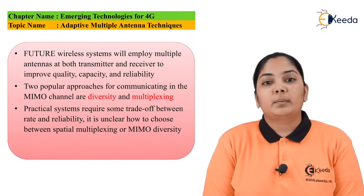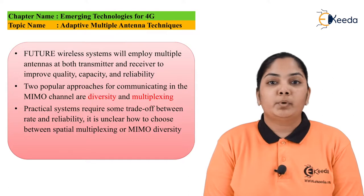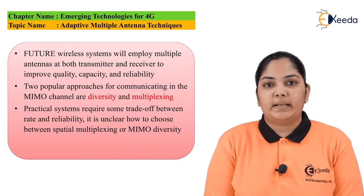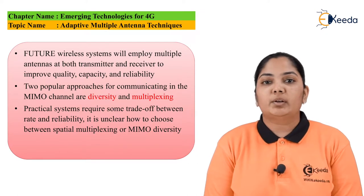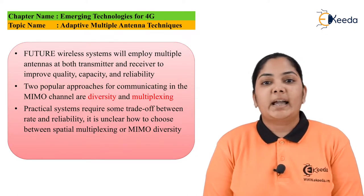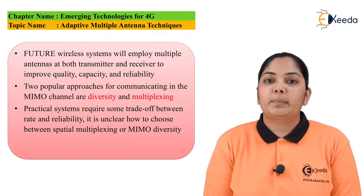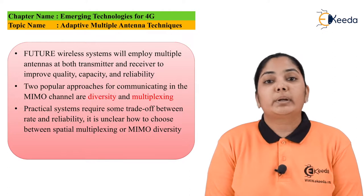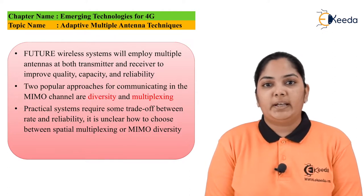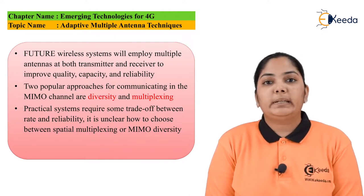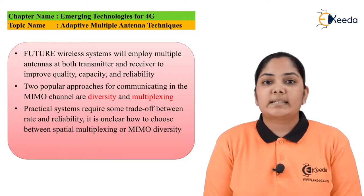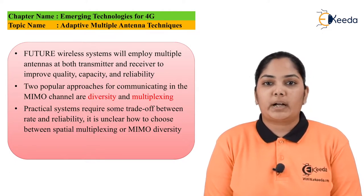The two most popular approaches for communicating in MIMO technology are called diversity and spatial multiplexing. In diversity, the same amount of information is transmitted through multiple channels. Since all these channels will go through independent or individual fading effects, it ensures that at least one channel will go through minimum fading, giving us reliability of transmission.